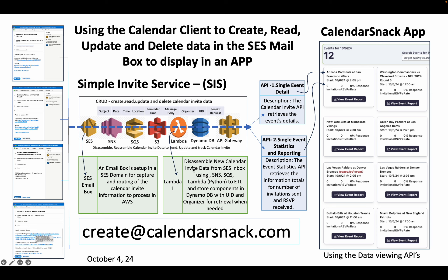The first Lambda hit — I talked about the disassembly and laying down of the calendar invite assets off the calendar client, whether Outlook or Google Calendar. Those assets are laid down into the appropriate databases in the storage layer of AWS. When we do the pull and retrieve, we have a single invite, a single event detail. API number one is the calendar invite API that retrieves the event details.